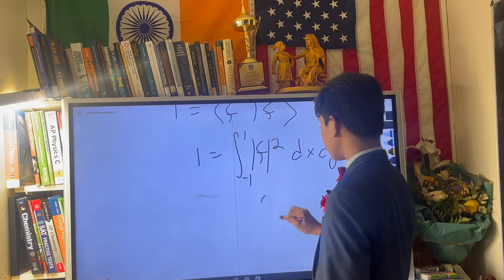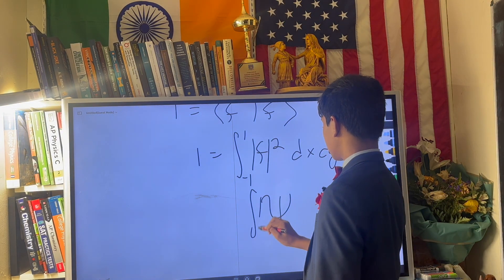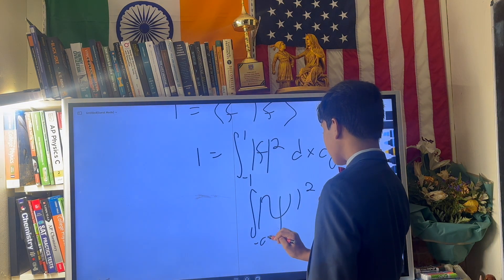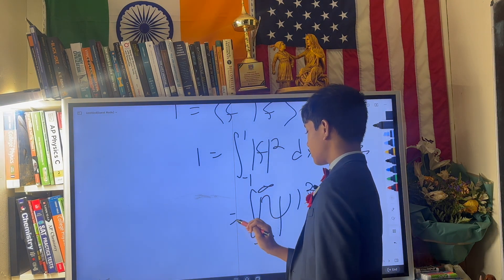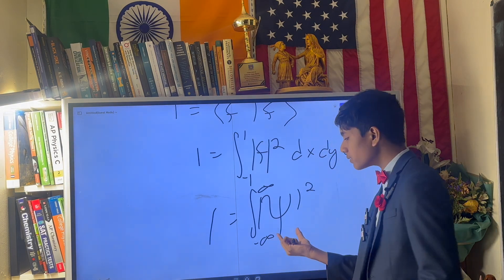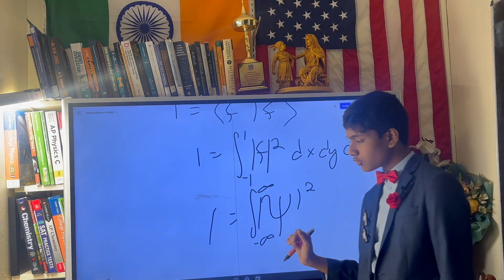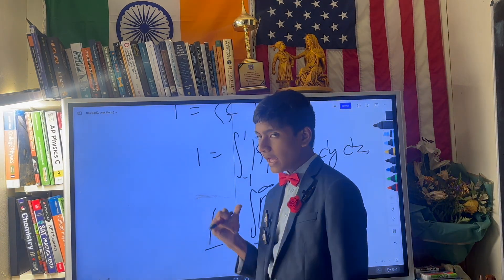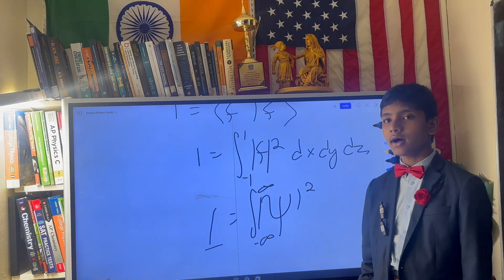Notice how striking of a resemblance this bears to the fact that this probability density function integral over the entire real line is one. Hence, it's normal over the entire real line. Simple.